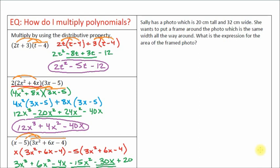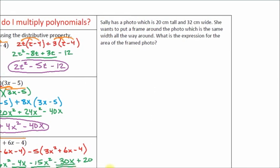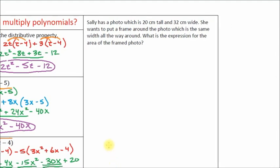In the section 'How Do I Multiply Polynomials,' there is a word problem to test your ability to interpret a word problem and use the skills we just practiced. Here is our word problem: Sally has a photo which is 20 centimeters tall and 32 centimeters wide. She wants to put a frame around the photo which is the same width all the way around. What is the expression for the area of the framed photo?